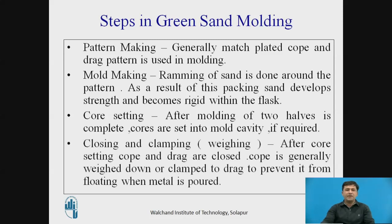When the pattern is made, moulds are made, ramming of sand around the pattern is done, and core setting is done, then finally the two parts have to be closed together — this is called closing and clamping, also known as weighing. After core setting, cope and drag are closed. The cope is generally weighed down or clamped to the drag to prevent it from floating when metal is poured.